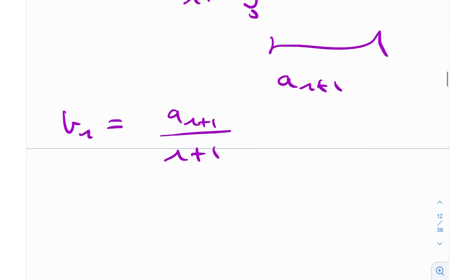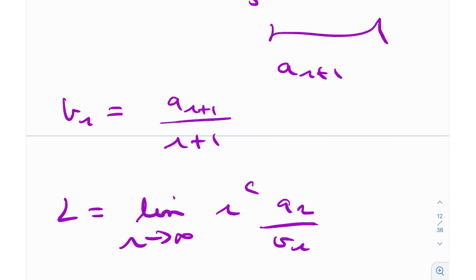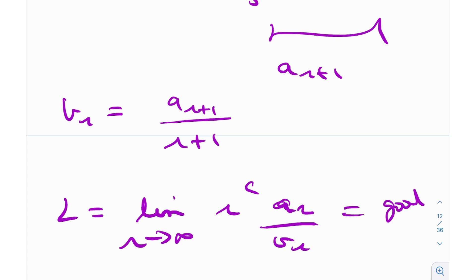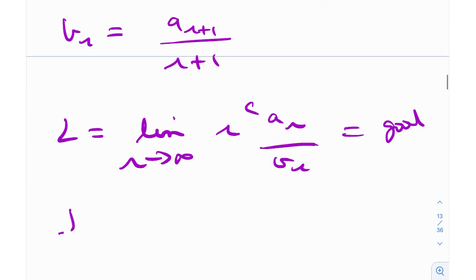Essentially we need to compute the limit as R tends to infinity of R^c · A_R / B_R — that's our goal. Since B_R = A_{r+1}/(r+1), we have 1/B_R = (r+1)/A_{r+1}. That's as simple as that.